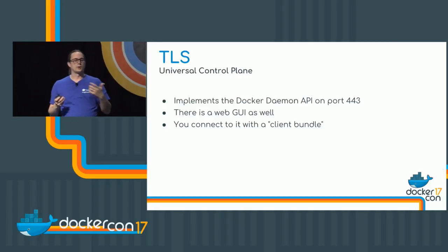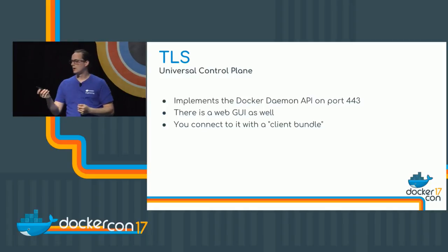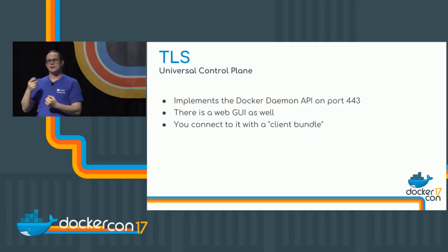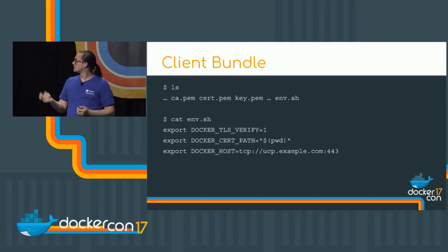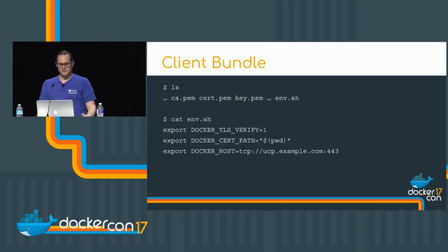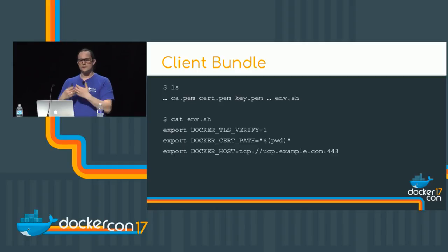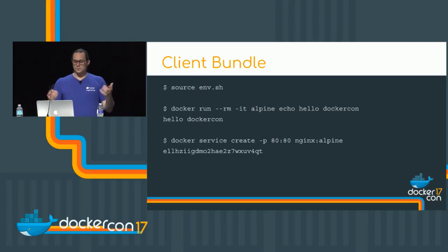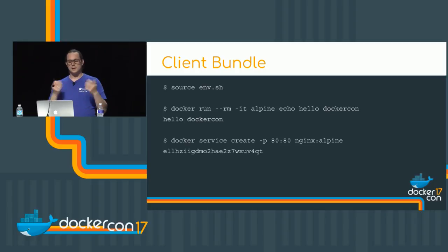If you want to use a regular Docker command line client like Docker or Docker Compose, you can. UCP has a feature called a client bundle that has the environment variables and the certificates — it needs a client certificate and the ability to trust the certificate the server presents. The client bundle has a ca.pem — the certificate authority that the UCP server presents — and then cert.pem and key.pem, the client certificate so the server knows who you are, plus DOCKER_TLS_VERIFY=yes, the cert path so the client can find the certs, and the Docker host so it knows where to connect. This works — we source env.sh, do a Docker run, and UCP passes it on to another Docker daemon and we get a container.